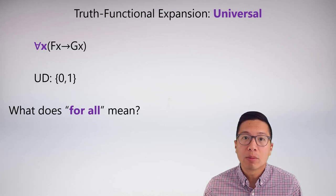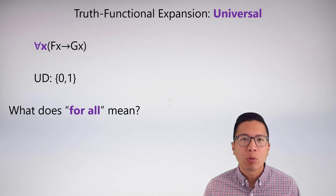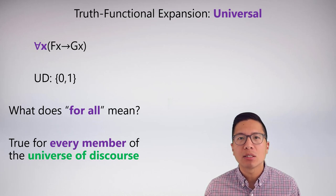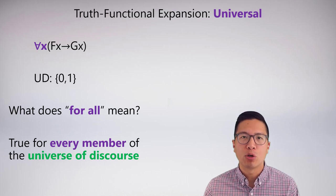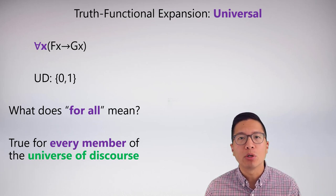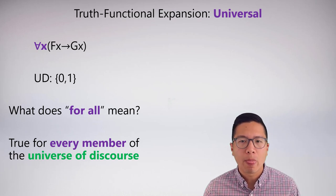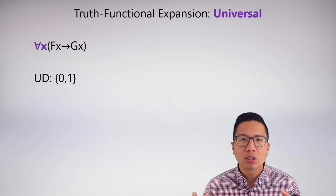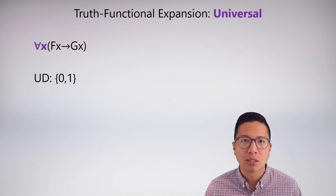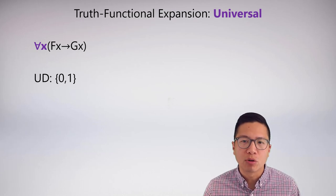But what does the 'for all' really mean? Let's consider a universe of discourse of 0 and 1. For all to have this property, it actually means that this sentence must be true for every member of the universe of discourse. Because I'm capping my universe to only two members—0 and 1—it must be true for 0 and it must be true for 1. We can use our skills of sentential logic to help us expand this sentence relative to the universe of discourse.